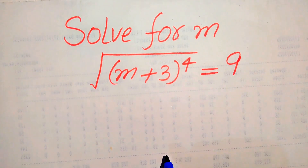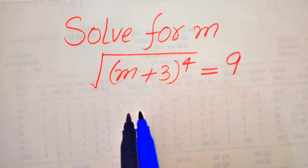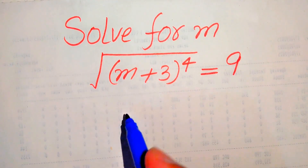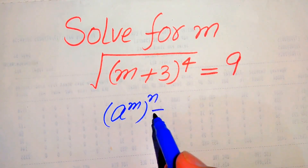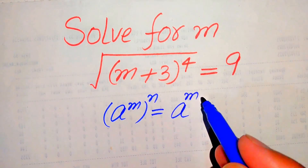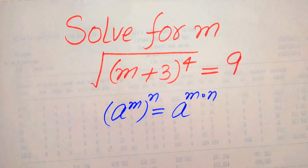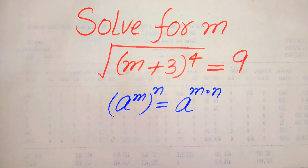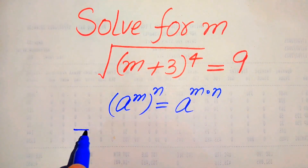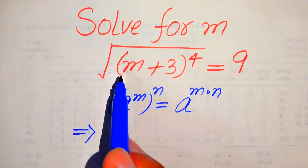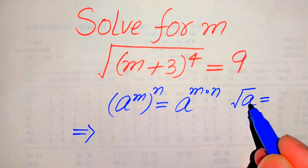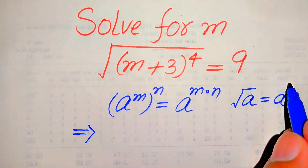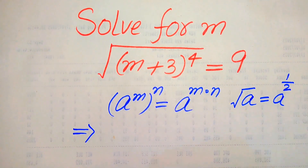The very first thing we are going to do is use the exponent law. You know about this law: if we have a to the power of m, to the power of n, it equals a to the power of m multiplied by n. We also write square root into exponent form — the square root of a is written as a to the power of 1 over 2.